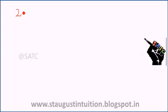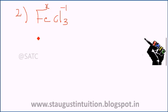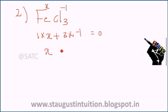Second question: FeCl3. Let Fe = x. x plus 3 × (−1) = 0, so x − 3 = 0, therefore x = +3. The oxidation number of Fe in FeCl3 is equal to +3.